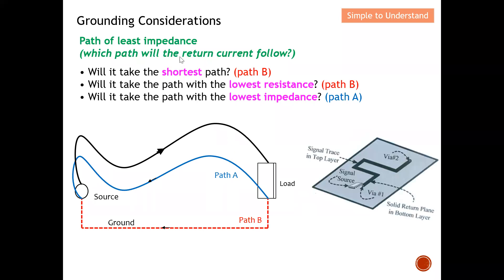Let's do a case study to understand this better. Suppose you have a source supplying current through the black trace to a load. There are two ways the current can return to the source: Path A or Path B through the ground plane. The question is: which path will the return current actually take? Will it take the shortest path, the path with the lowest resistance, or the path with the lowest impedance?